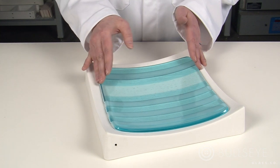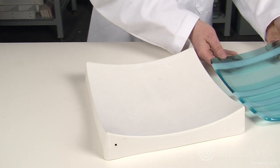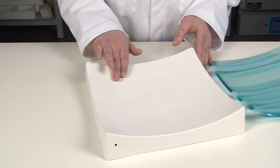A slumping mold must be prepared with a separator to prevent the glass from sticking to it during the firing process.